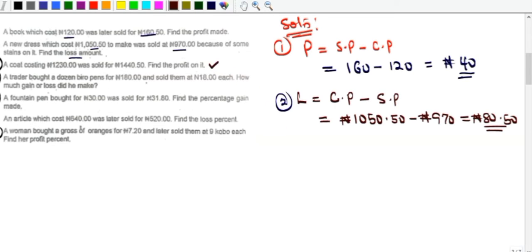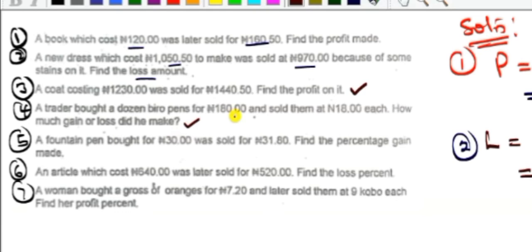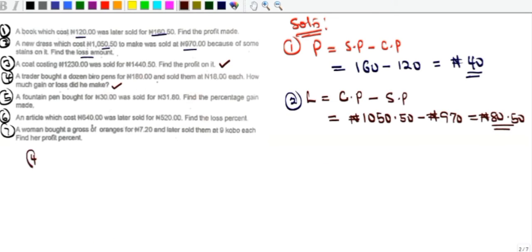Example four asks whether a transaction is a gain or a loss. A trader bought a dozen pens — that is 12 pens — for 118 naira and sold them at 18 naira each. There are two approaches: divide 118 by 12 to get the cost per pen, or multiply 18 by 12 to get the total selling price.